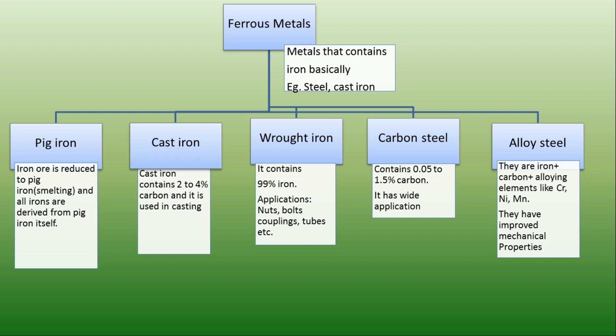Next, carbon steel. Steel means iron and carbon. Carbon steel contains carbon up to 1.5%. The small change in carbon content varies the mechanical properties of steels drastically. Depending on carbon content, they are classified as low carbon steel, medium carbon steel, and high carbon steel. In low carbon steel, carbon percentage varies from 0.05% to 0.3%.